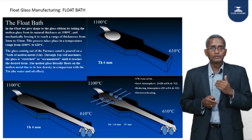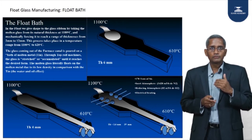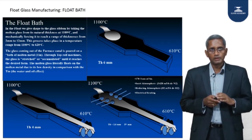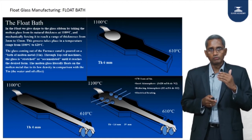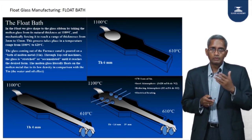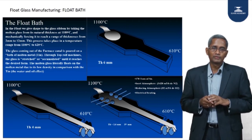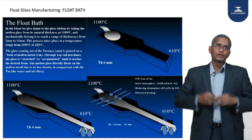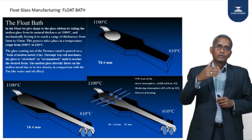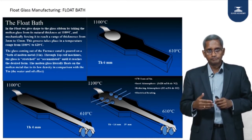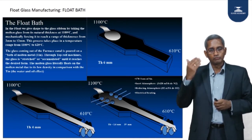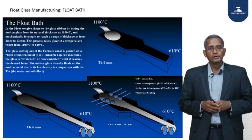In glass manufacturing we are controlling the dimensions — width and thickness — which are formed in the float bath. Pilkington brothers invented this process in 1957. Until then, glass was made vertically using the Foucault and Colburn process since 1913, where the glass was taken upward and tended to follow gravity and sag, even with rollers on the sides.